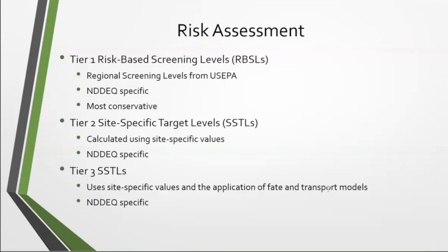Under ND RBCA there are essentially three tiers of screening levels. Tier one uses risk-based screening levels for both residential and commercial properties, based on US EPA screening levels calculated with a target risk of 1×10⁻⁵. We differ from EPA in that EPA typically uses 10⁻⁶ — we went slightly less conservative and used 10⁻⁵, retaining a hazard quotient of one. Groundwater risk-based screening levels are based on EPA's MCLs. NDDEQ also has some state-specific RBSLs for certain contaminants such as TPH and nitrates.